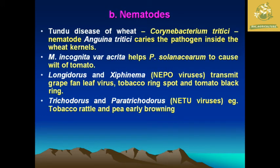Nematodes also spread diseases — important examples include tundu disease of wheat, Longidorus, Trichodorus, and Paratrichodorus, which transmit viral diseases. In some cases nematodes directly cause diseases to healthy plants. Nematodes thus have both beneficial and harmful characters.